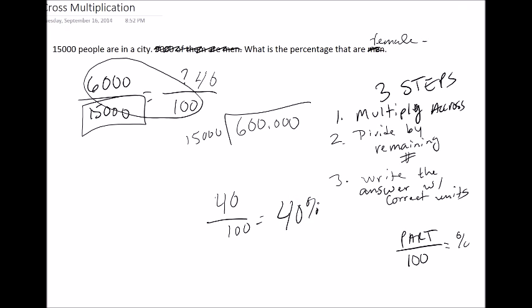So as you can see, cross multiplication allows for us to use it with any numbers. We don't have to guess at how big it is or how many units it is. All we have to do is cross multiply across and then divide by the remaining number. It's as simple as that.